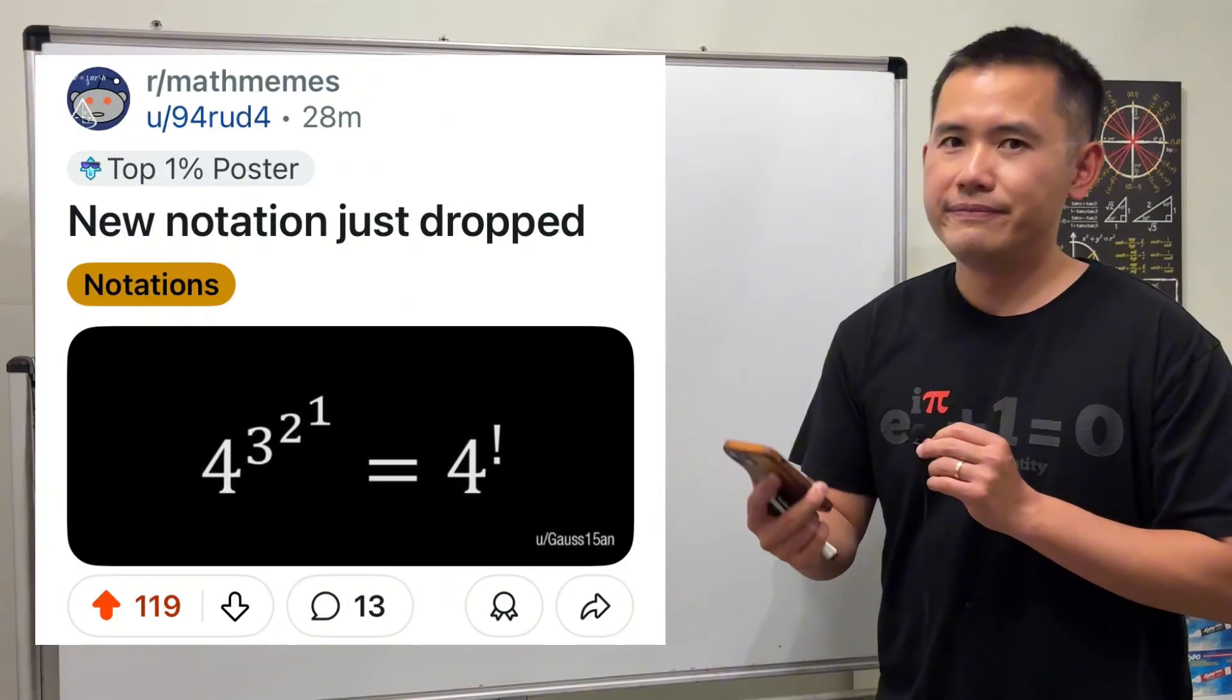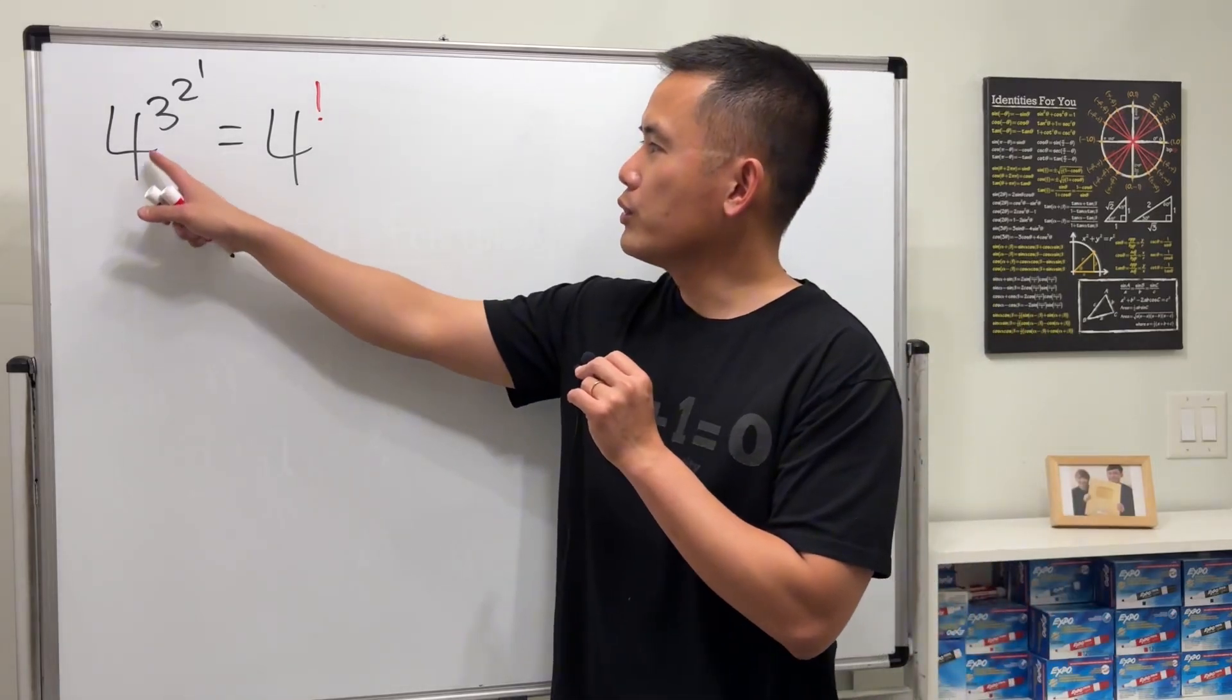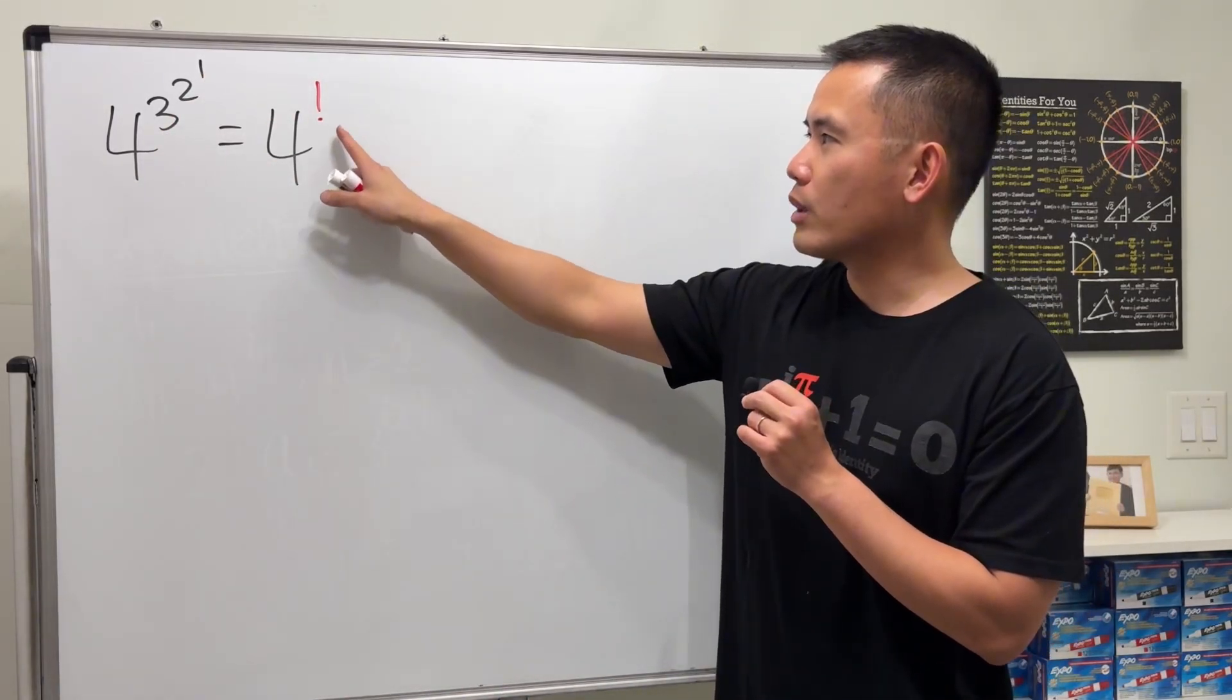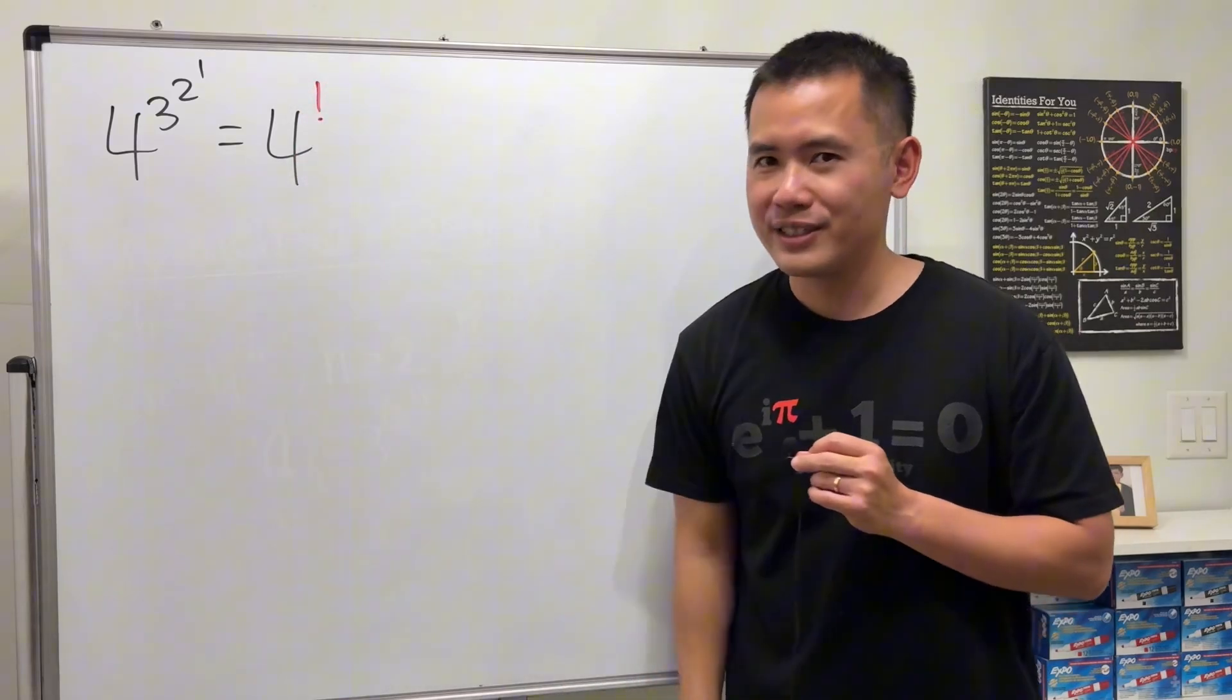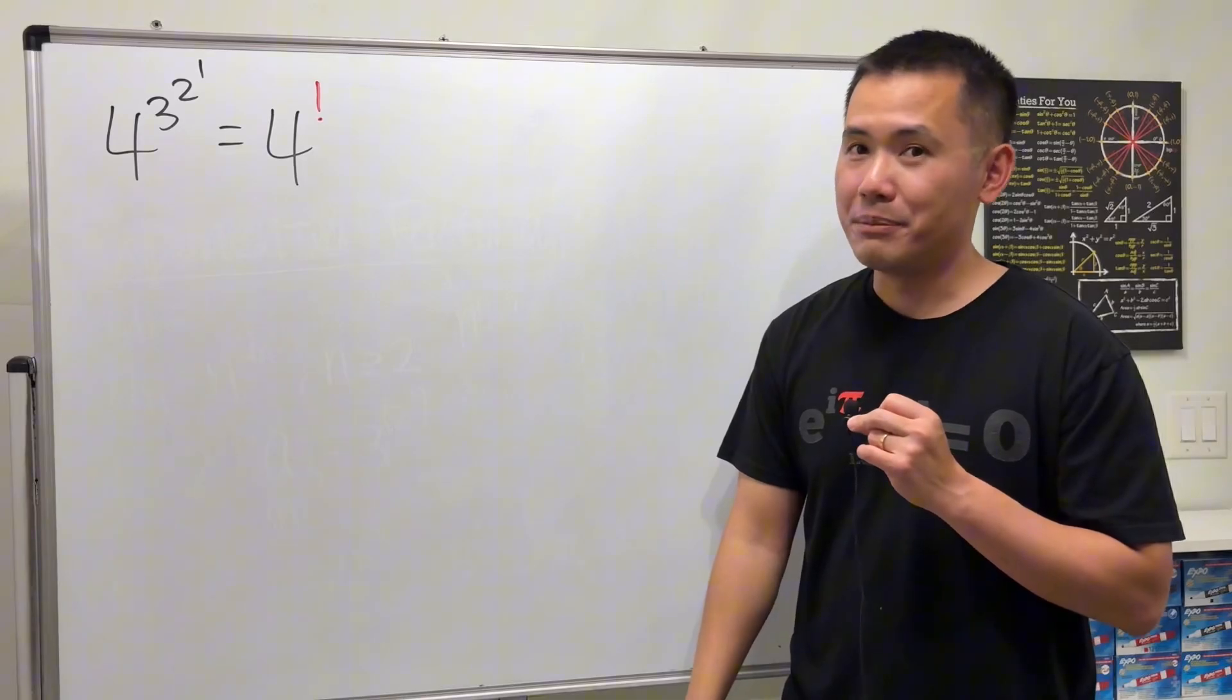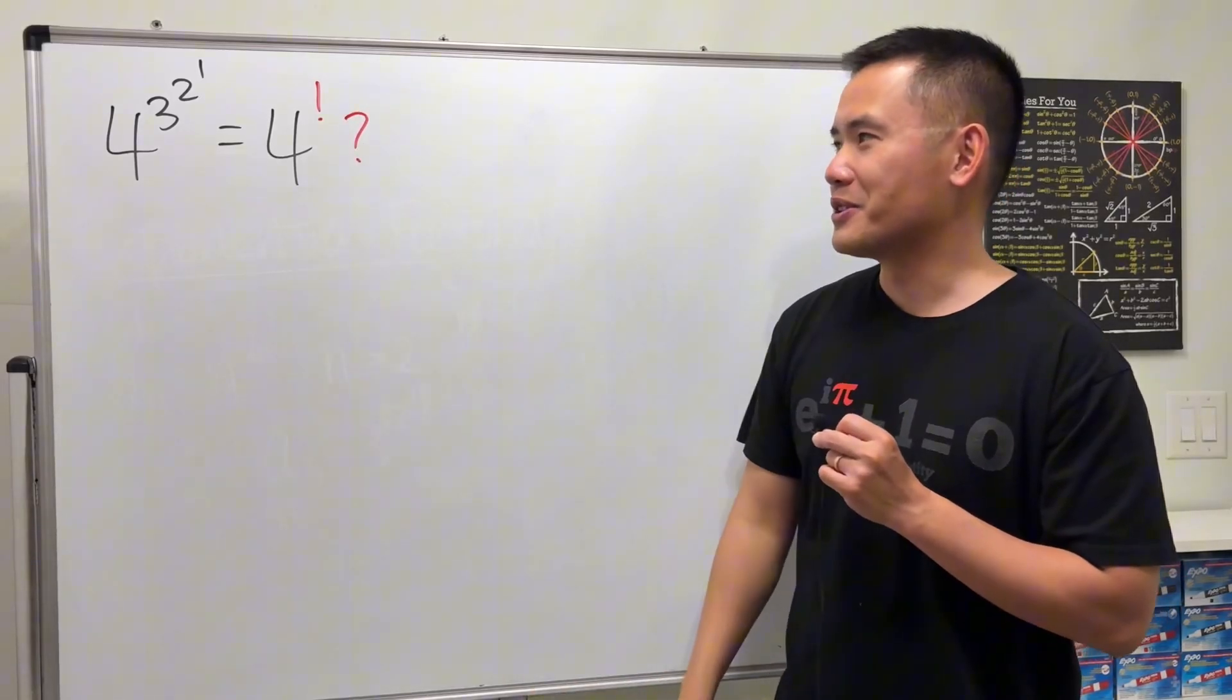New notation just dropped. Let's have a look. Right here they are saying that if we have four to the third to the second to the first power, that is equal to four to the power of an exclamation mark. Of course this is the factorial notation in math, but I don't know if this is a legitimate notation though.